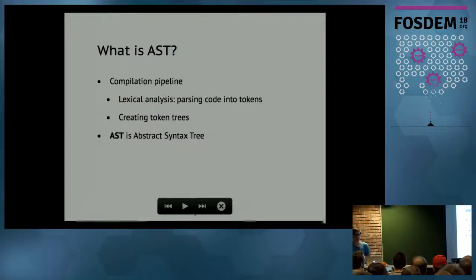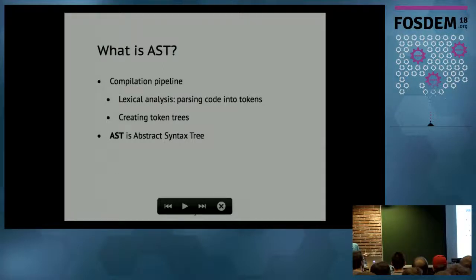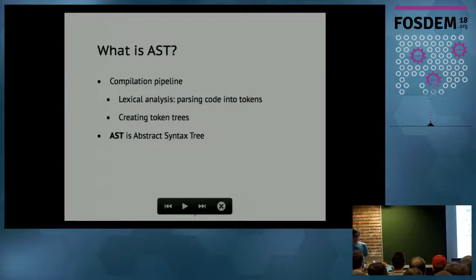A token is a very simple thing and can be thought of as a word. It can be a keyword, a string from your code, a number — basically anything. A return is a token. A fn is a token. Having just tokens, we can do many useful things. What we do is put tokens in token trees, and out of those token trees we create a data structure called an abstract syntax tree, or AST for short.